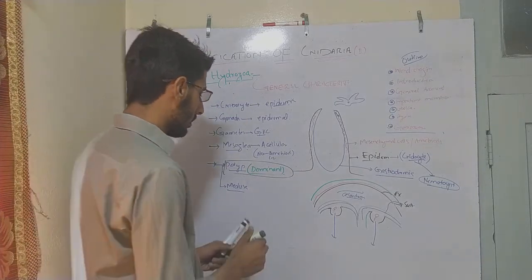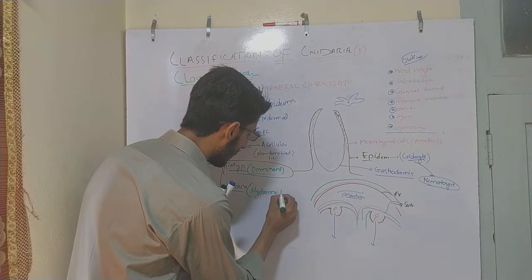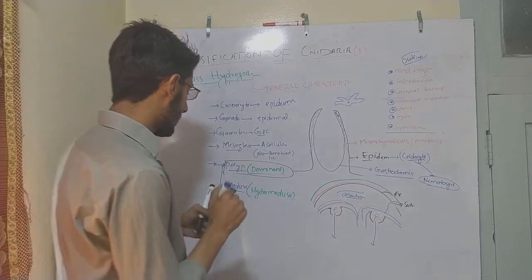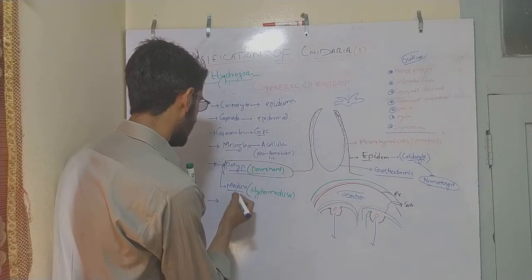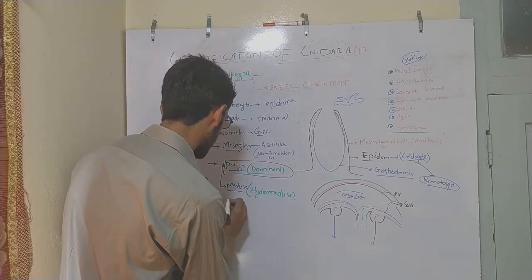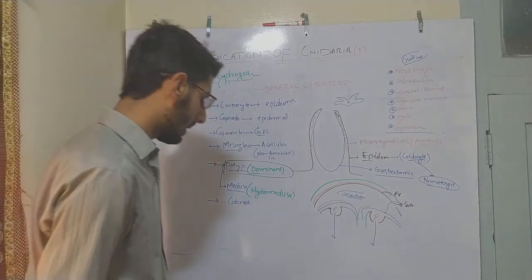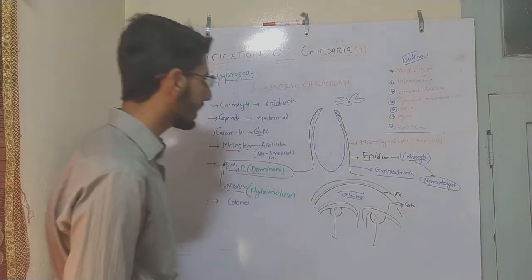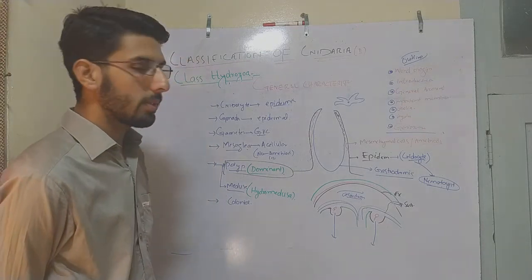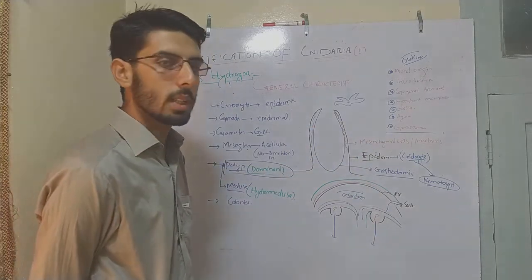Besides these characteristics, the majority of Class Hydrozoa members form colonies — meaning individuals combine together and live collectively. We will discuss this colony formation in detail when we study Obelia geniculata and Physalia.